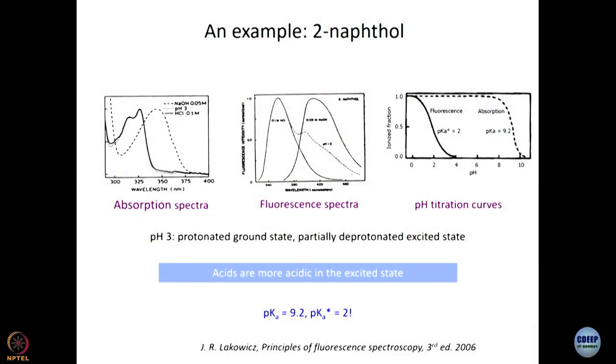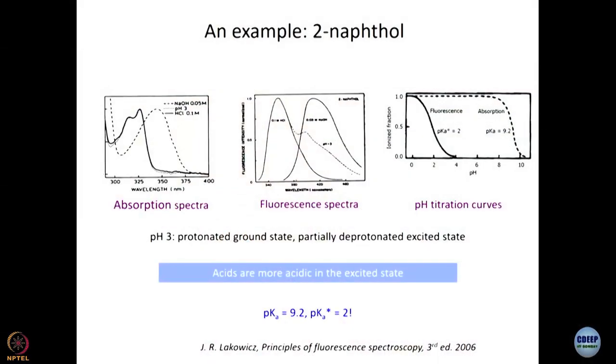If I take the same beta-naphthol and excite it using pulse light, the moment the pulse is incident on the beta-naphthol solution we will get a burst of protons coming out. Within a 100 femtosecond pulse, we would have created a certain concentration of protons in the vicinity of the light spot incident on the sample. So we can create bursts of protons and use them to initiate acid-catalyzed reactions with femtosecond time accuracy. We can also follow the time it takes for naphtholate to form from beta-naphthol post-excitation using a pump-probe experiment.